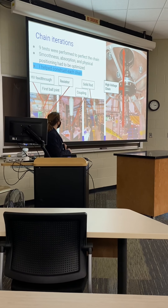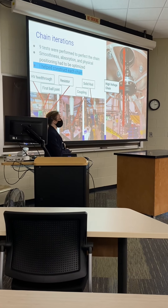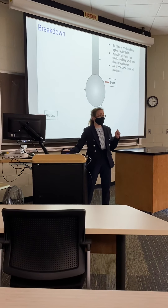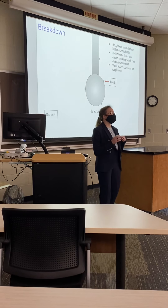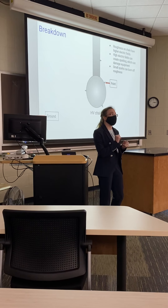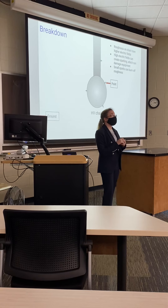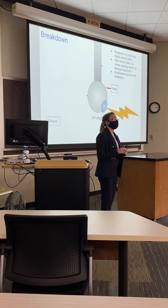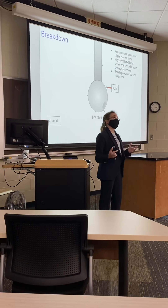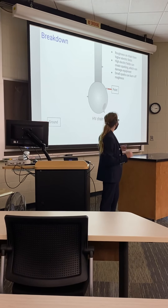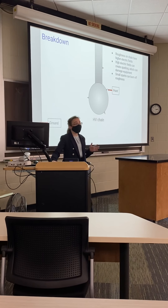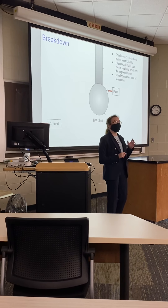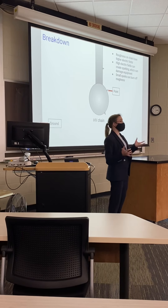One thing you may notice in all of these chains is that they're shiny, and that's not for aesthetic reasons. When you have a point or a ridge on one of these high voltage chains, that creates a higher electric field region around the point and can cause it to spark. If you have too much sparking, that's called breakdown, and it can damage both the high voltage chain and the electrical equipment surrounding it. So we try to avoid it at all costs. However, if it sparks for just a second, it can burn off the ridge, making the surface smoother and improving the system overall.